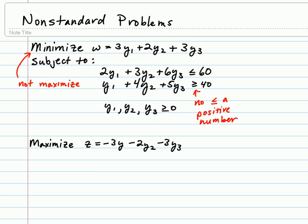So as I approach this problem then, I'm going to go ahead and rewrite the inequalities and add in the corresponding slack and surplus variables. The first linear inequality constraint gives us 2y sub 1 plus 3y sub 2 plus 6y sub 3 plus our slack variable s sub 1 equals 60. Our second inequality constraint gives us y sub 1 plus 4y sub 2 plus 5y sub 3.